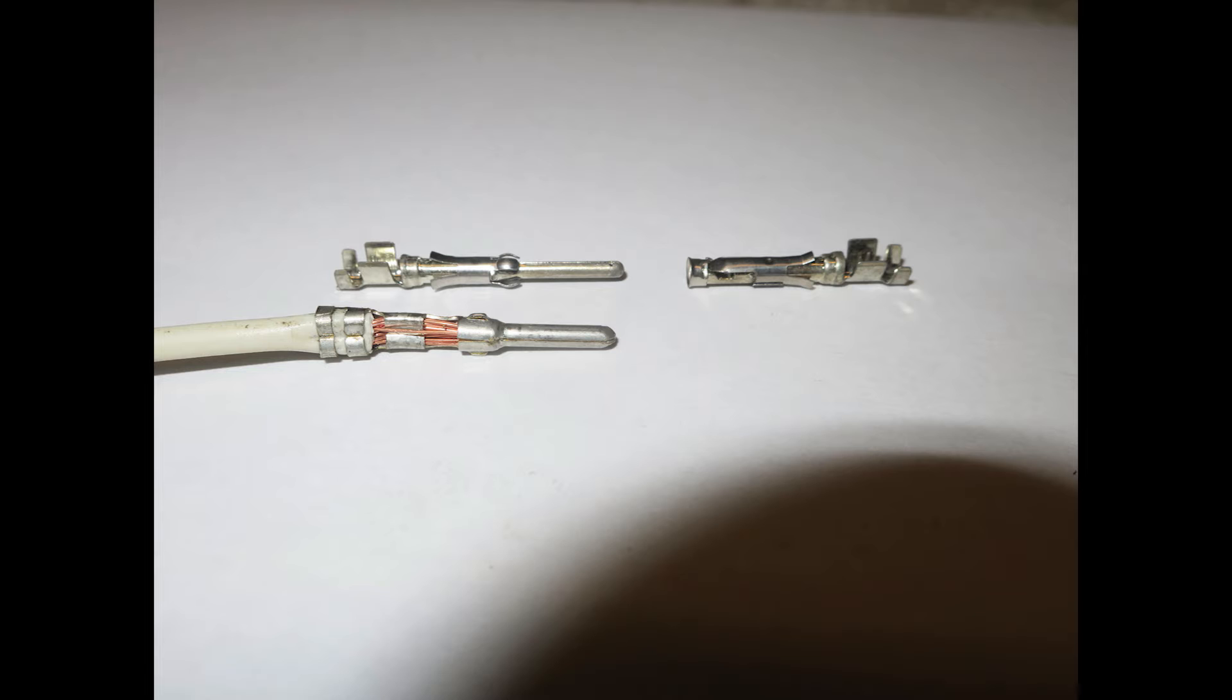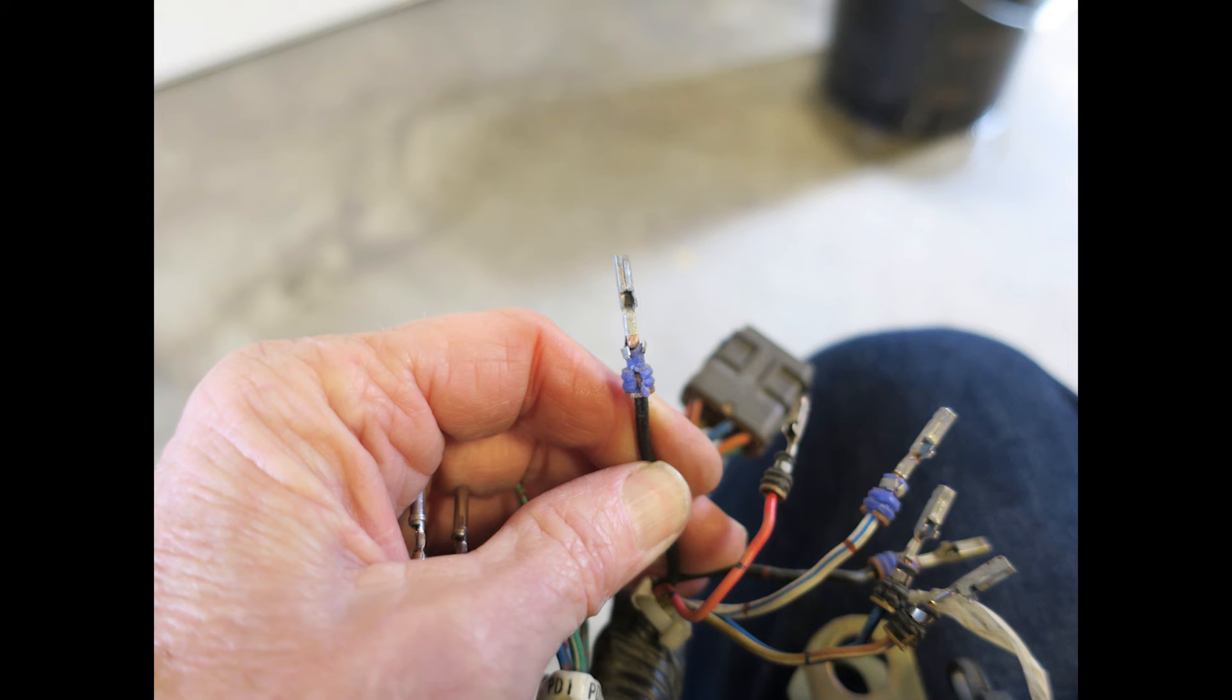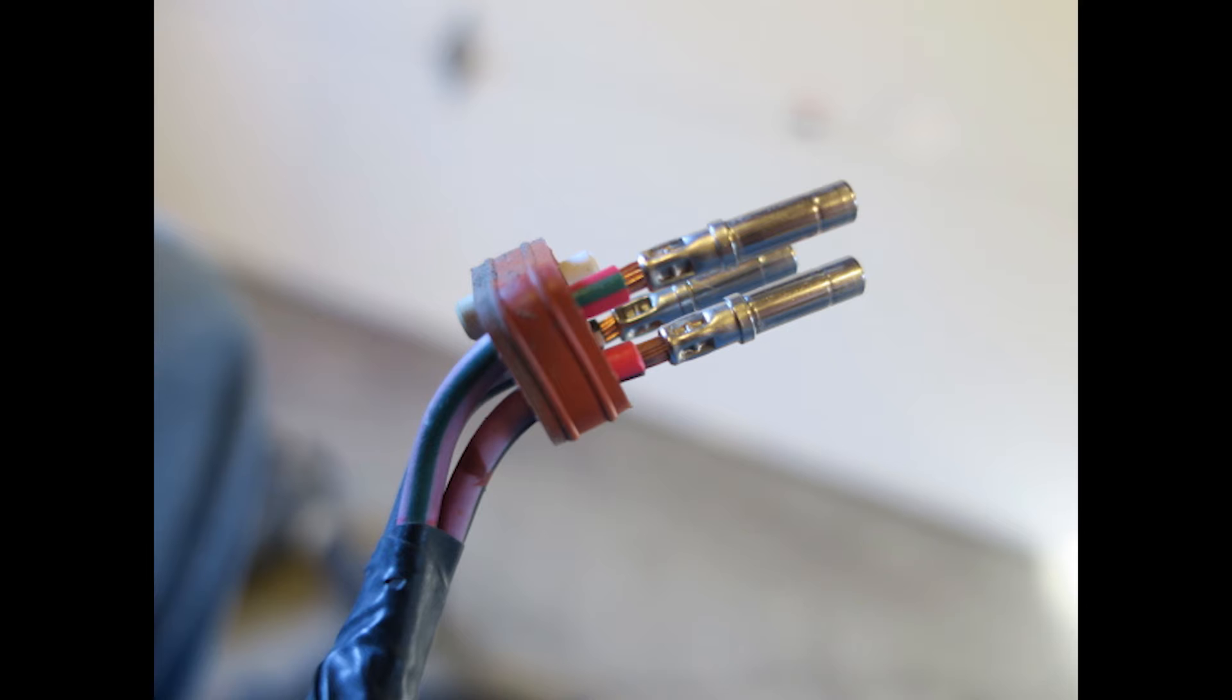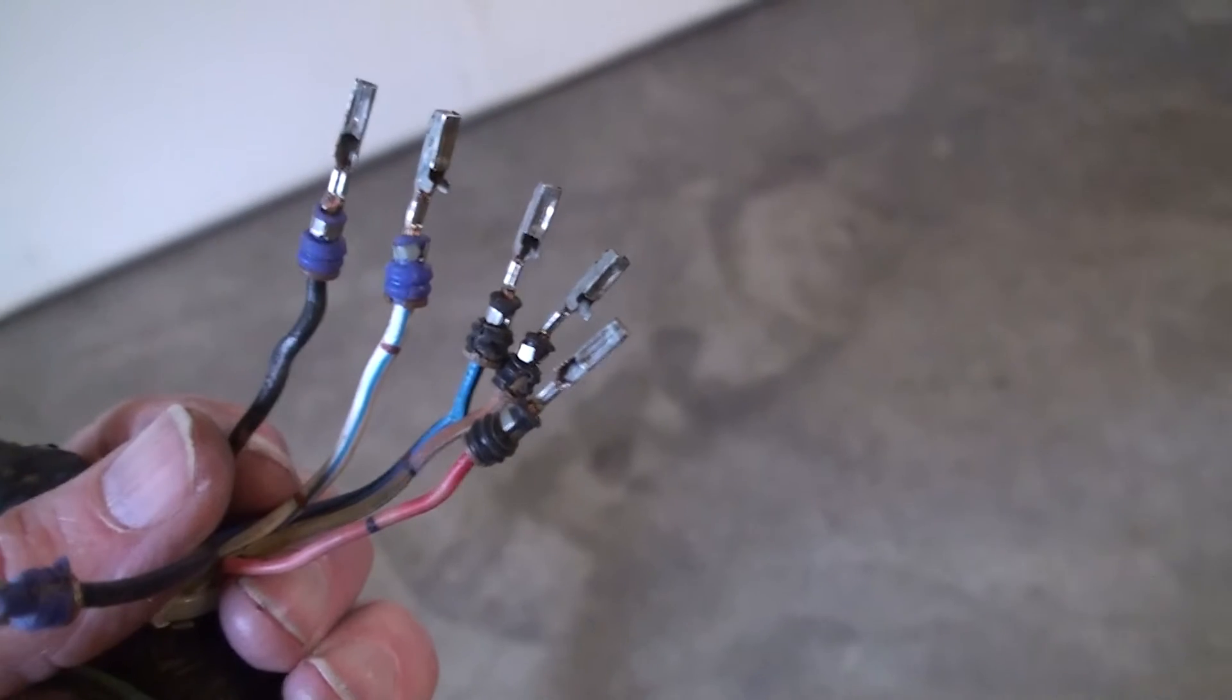Before installing a terminal on a wire, it is important to examine an existing terminal on the harness to make sure they are the same type and size. Also check for a seal that may need to be installed on the wires before crimping the terminal to the wire.